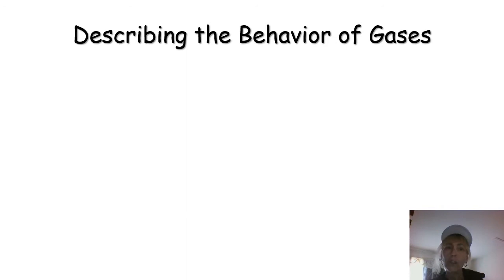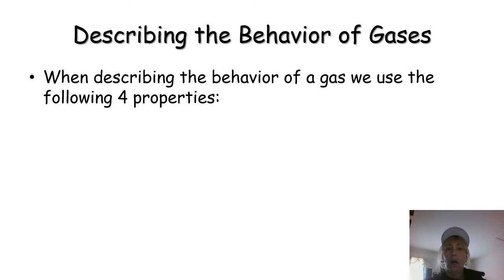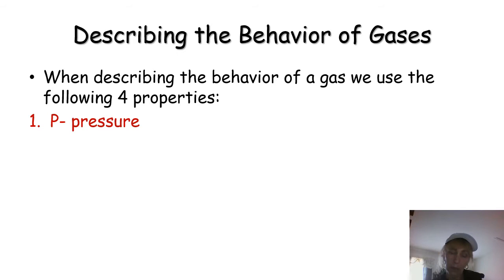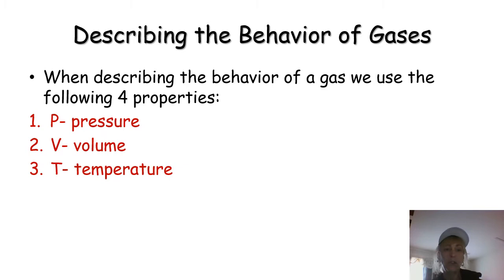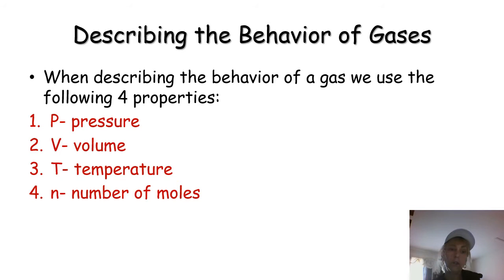When you talk about gases, when you describe the behavior of gases, we use four different properties. Those properties are pressure, denoted with a capital P; volume, denoted with a capital V; temperature, denoted with a capital T; and our fourth property is the number of moles, denoted by a lowercase n. We're going to look at each one of these individually so you understand each one of them better.